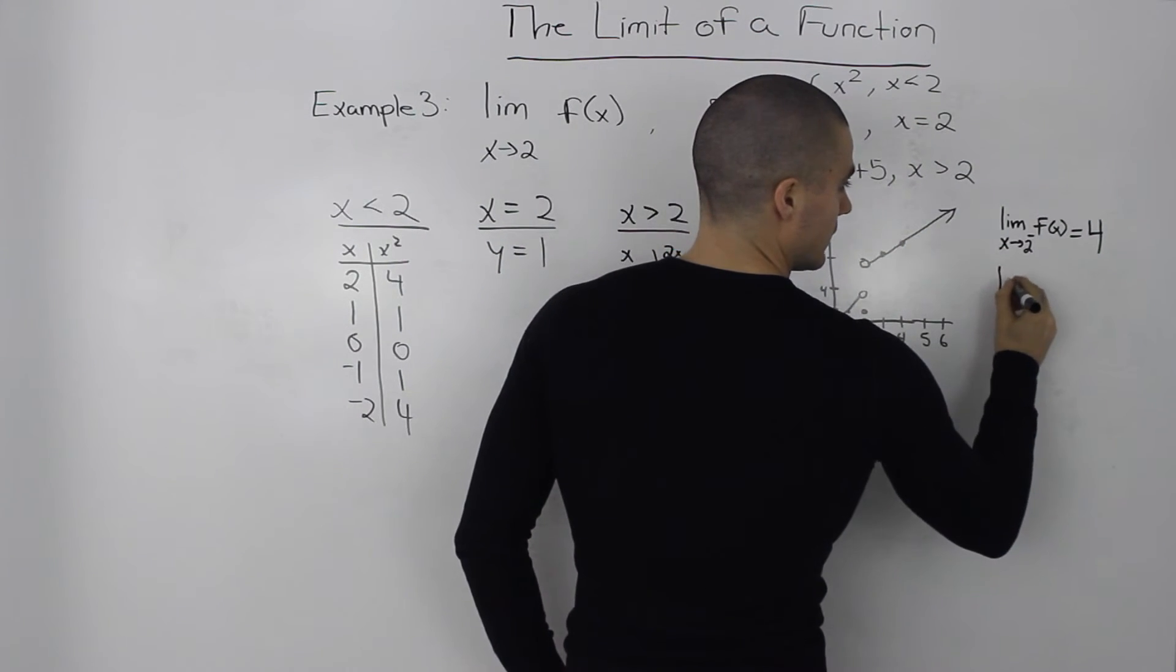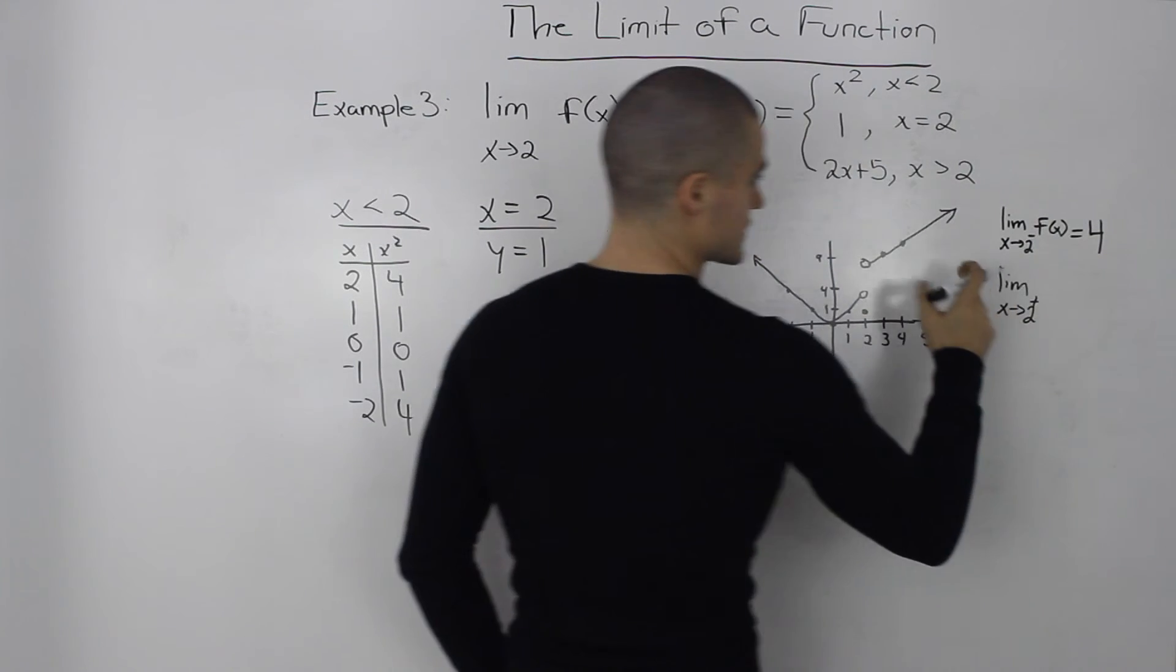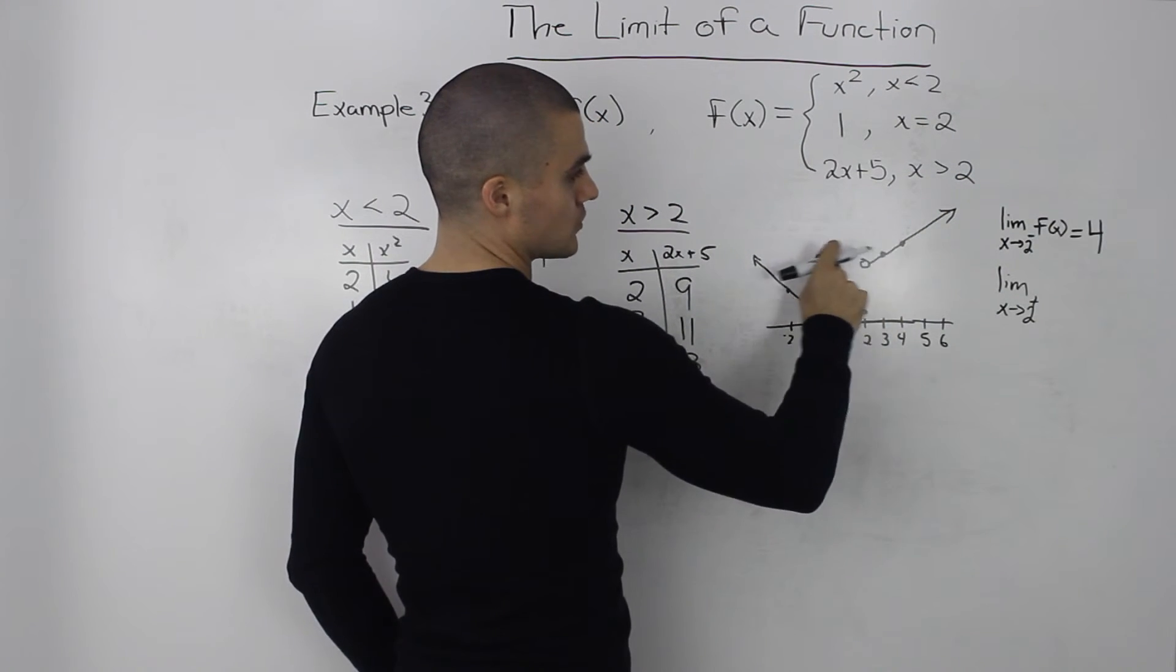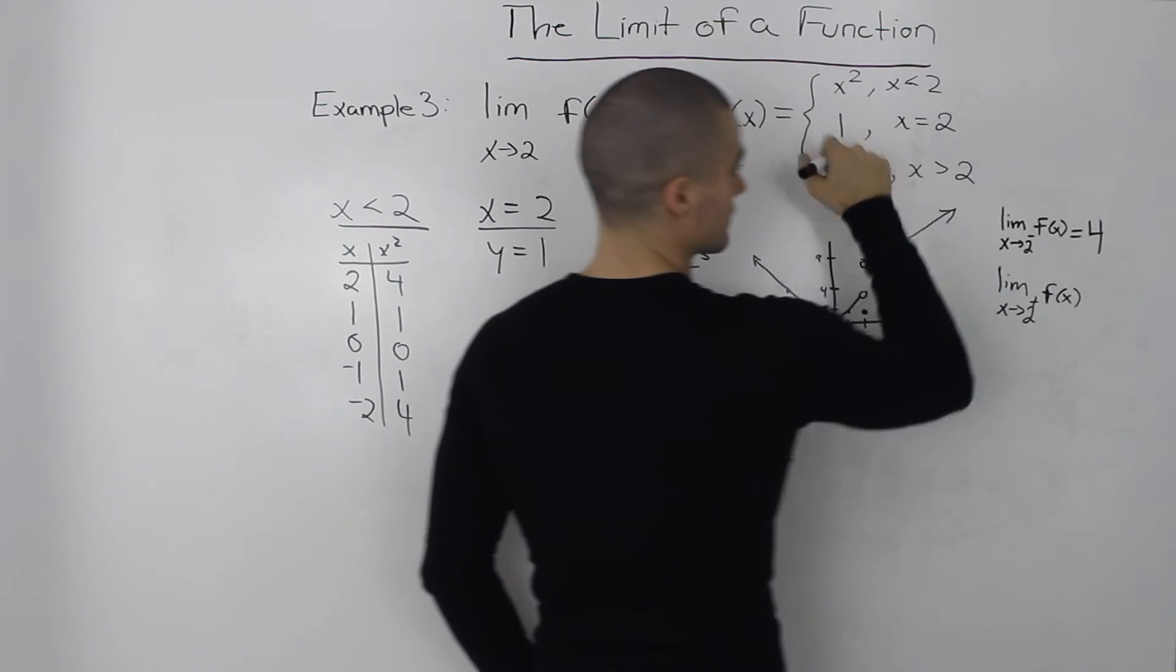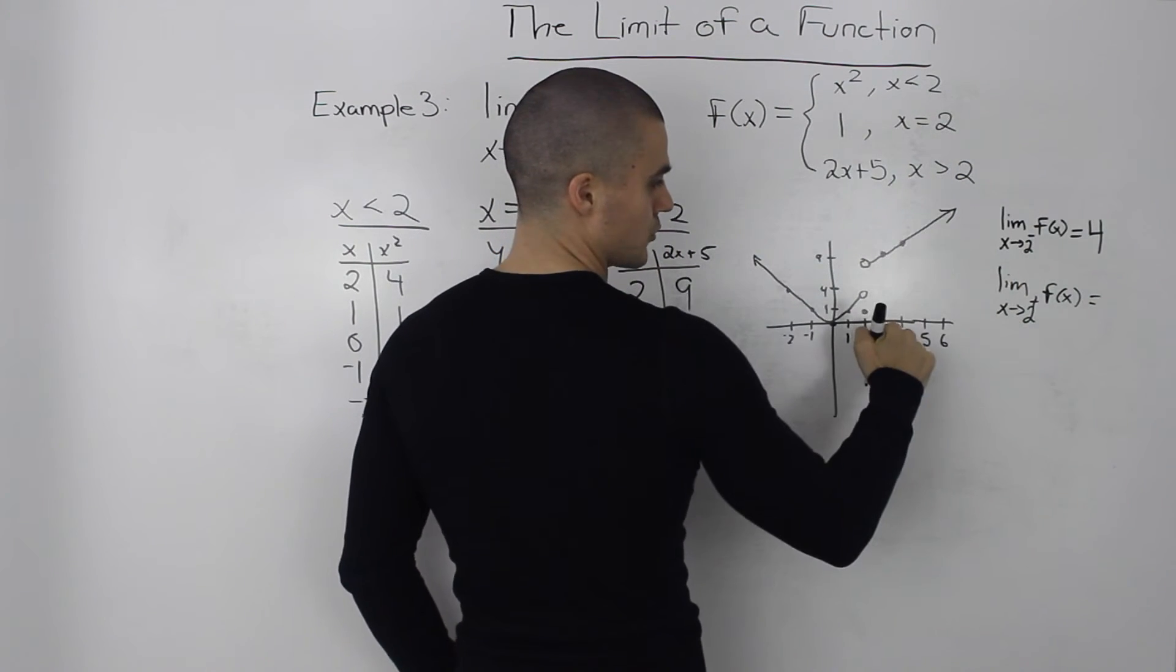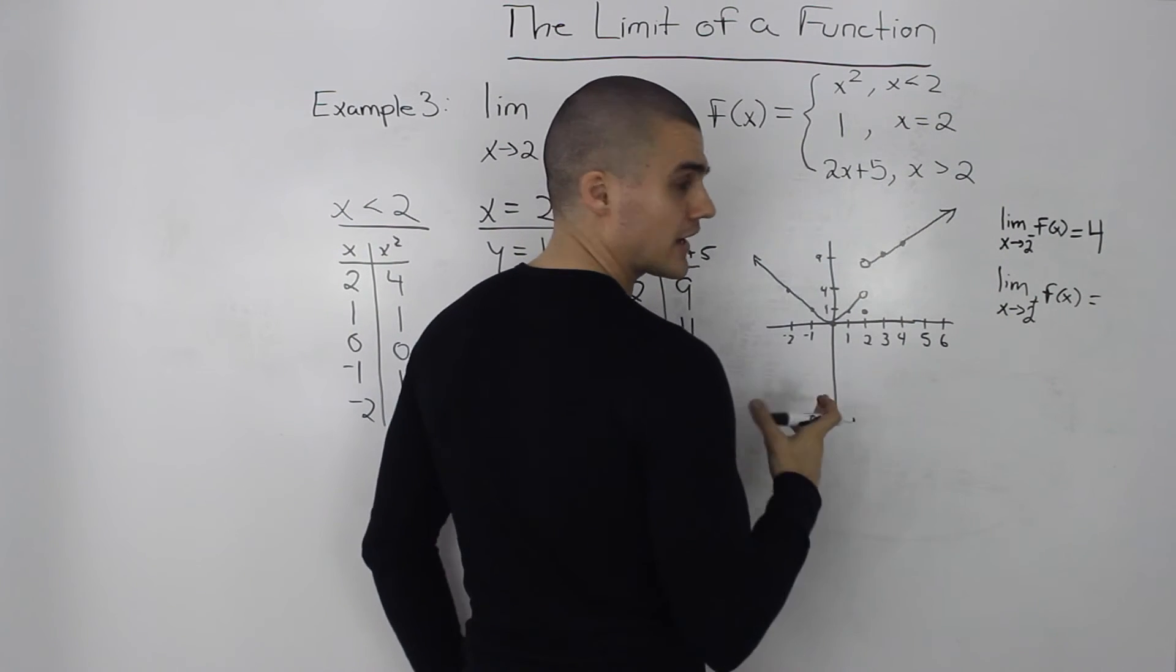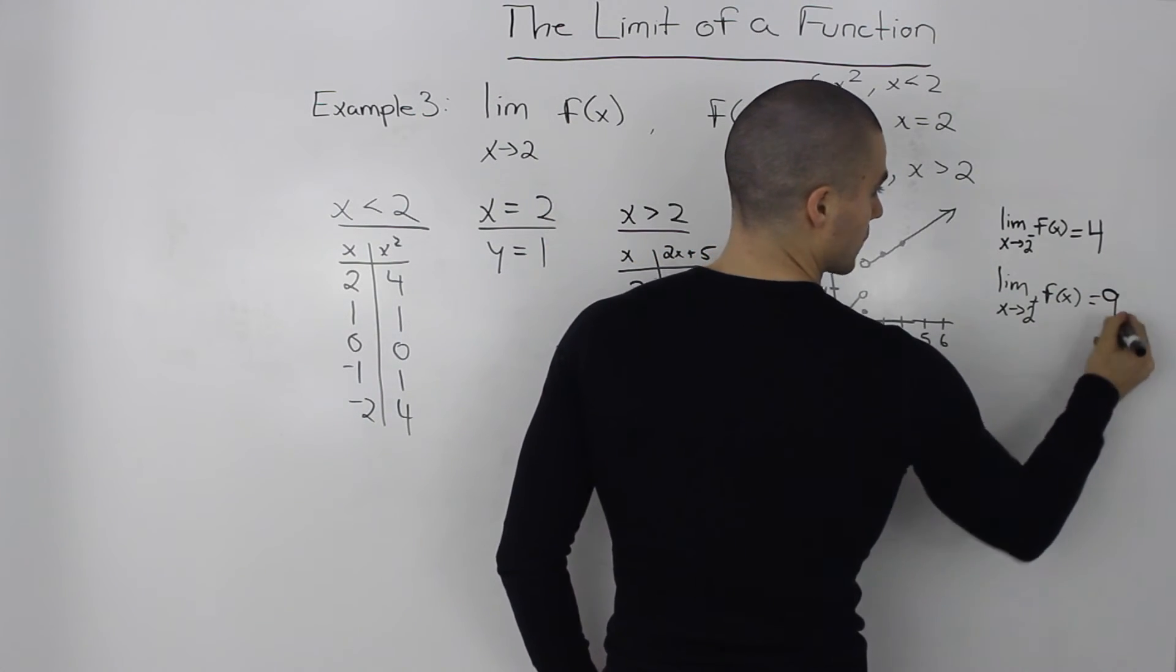And then the limit as x approaches 2 from the positive side. From the positive side as we're approaching the x value of 2 from the right side the y value is approaching 9. Again it's not defined at 9 but it's approaching it. And that's all that matters when we're dealing with limits.